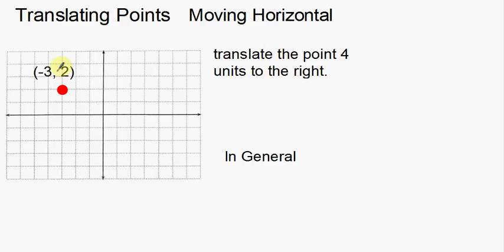So we're going to start with this point, which is negative 3, 2 right here. What I want to do is translate the point four units to the right. We have a picture here to help us with that. So I'm going to take this point and move it one, two, three, four units to the right.